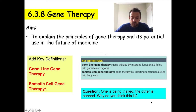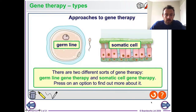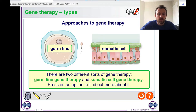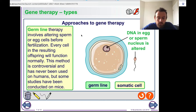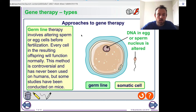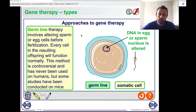Let's look at germline and somatic cell therapies in a bit more detail. Germline therapies involve altering either the sperm or the egg cell — or if you alter the very early embryo, that could also produce an inheritable change.